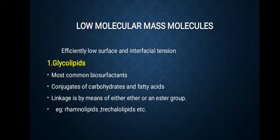Low molecular mass molecules efficiently lower surface and interfacial tension. Interfacial tension is defined as the work which must be expended to increase the size of the interface between two adjacent phases which do not mix completely. Glycolipids are one of the most common biosurfactants — conjugates of carbohydrates and fatty acids linked by either ether or ester groups. Examples include rhamnolipids and trehalose lipids.